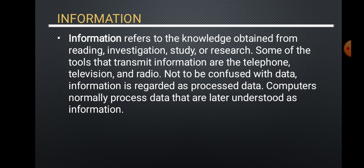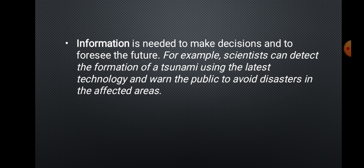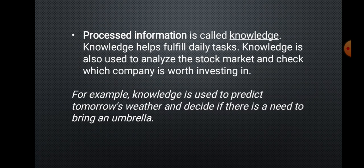Breakdown of ICT — Information: Information refers to the knowledge obtained from reading, investigation, study, or research. Some tools that transmit information are the telephone, television, and radio. Information is regarded as processed data. Computers normally process data that is later understood as information. Information is needed to make decisions and foresee the future — for example, scientists can detect the information of a tsunami using the latest technology and warn the public. Processed information is also used to analyze the stock market and predict tomorrow's weather.